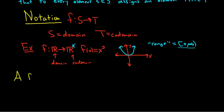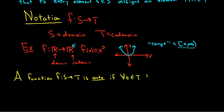We say a function f from S to T is onto if for all little t in capital T, we can find some little s in capital S such that f of s is equal to t. In this example, our function f is not onto.